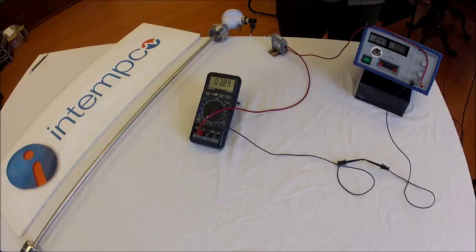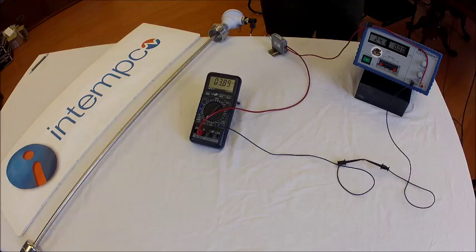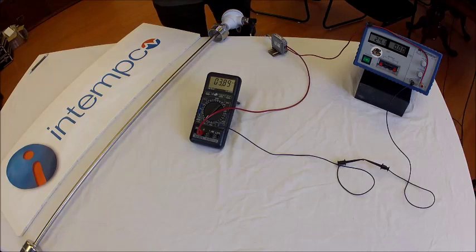We are starting with the power supply set to 24 volts and the sensor all the way at the bottom. Make sure the float is all the way down. As you can see, the current indicated is not 4 milliamps.